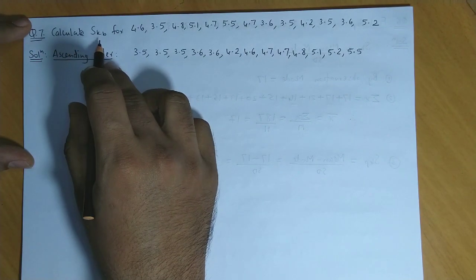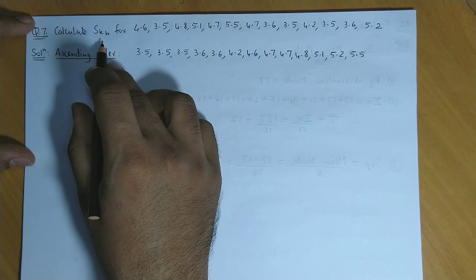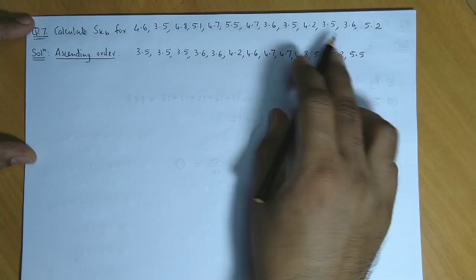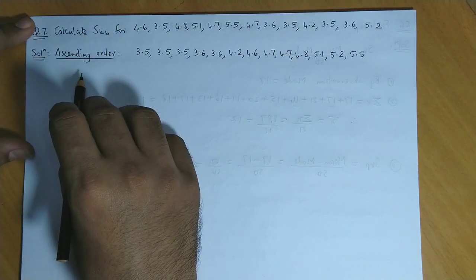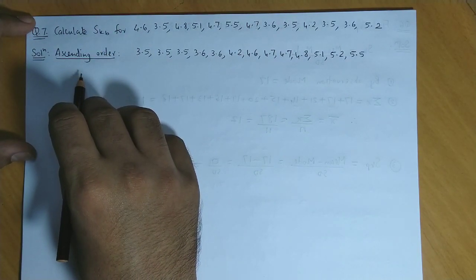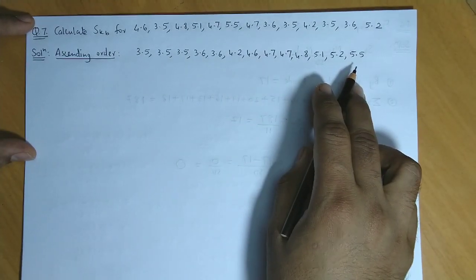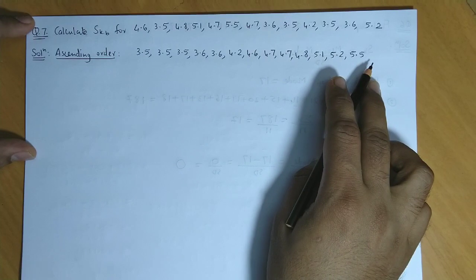Calculate SKB, that is Bowles coefficient for skewness. Raw data is given. So we know that for Bowles coefficient we require Q1, Q2, Q3. And for quartiles we need to arrange the data in ascending order. So I have already arranged the data in ascending order.